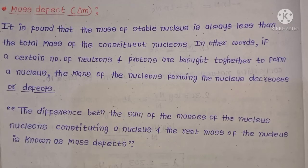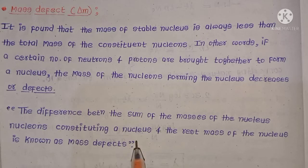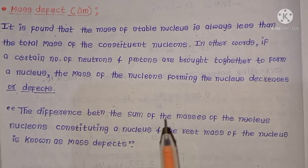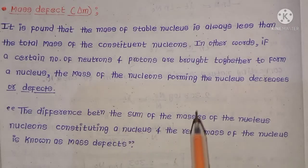Mass defect is the difference between the sum of the masses of the nucleons constituting a nucleus and the rest mass of the nucleus. So the total mass of protons and neutrons minus the rest mass of the nucleus gives us the mass defect.